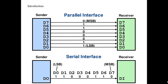The disadvantage of parallel communication is that it uses multiple wires for transmitting the data, so the cost of parallel communication is more. To reduce the cost, serial communication is preferred.